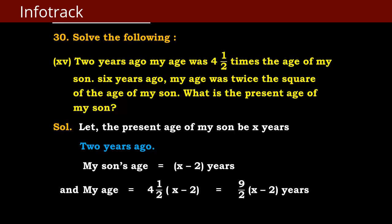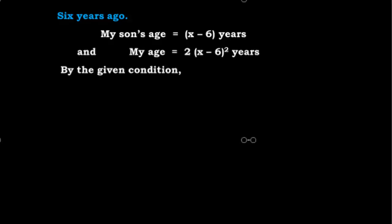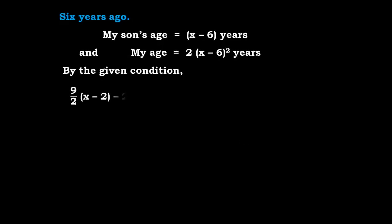6 years ago my son's age is x minus 6, and my age is 2 into x minus 6, the whole square. By the given condition the difference of these ages is 4. So: 9 upon 2 into x minus 2, minus 2 into x minus 6 the whole square, is equals to 4.